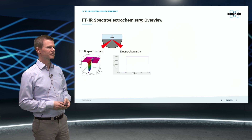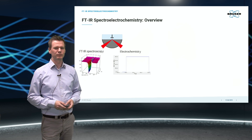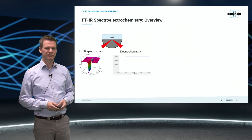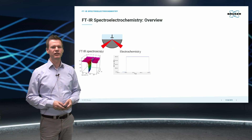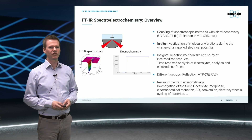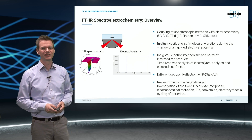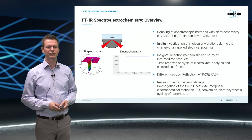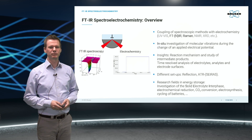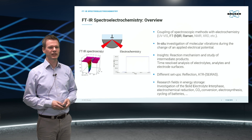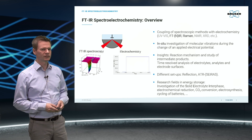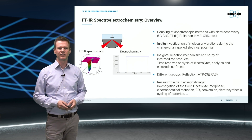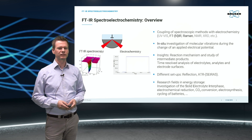In general, spectro electrochemistry is a combination of a spectroscopic technique with an electrochemical method. FTIR spectro electrochemistry is very versatile for in-situ observations of molecular vibrations during the alteration of an applied electrical potential. With its use, important information on the reaction mechanism can be derived. There are different possible measurement setups which can be applied: attenuated total reflection or external reflection. In this video, we will focus on the ATR technique for the measurement of the electrolyte solution.